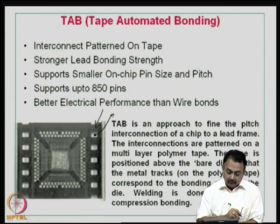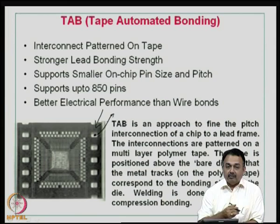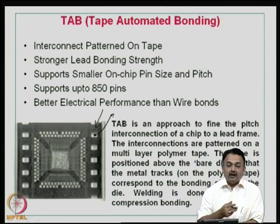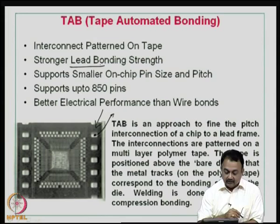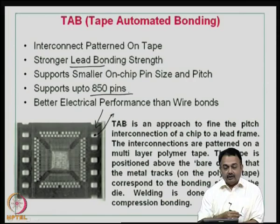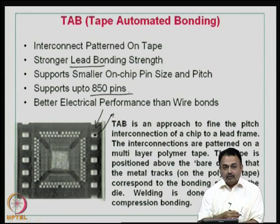The lead materials can be different. It can be made out of gold, or other materials like Kovar, Invar, or it can be simply tin-lead plated materials. Basically, we are going to use leads and it supports smaller on-chip pin size and pitches. It supports up to 850 pins and it has got better electrical performance than wire bonds. The advantage of using TAB is that you can increase the number of I/Os compared to wire bond structure.